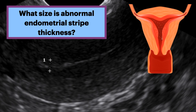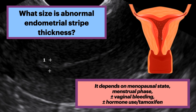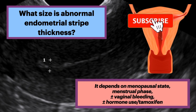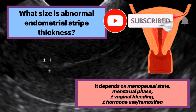What size is abnormal endometrial stripe thickness? This is a complicated question for ultrasound, and it depends on menopausal state, menstrual phase if premenopausal, and the presence or absence of vaginal bleeding and hormonal use or tamoxifen.